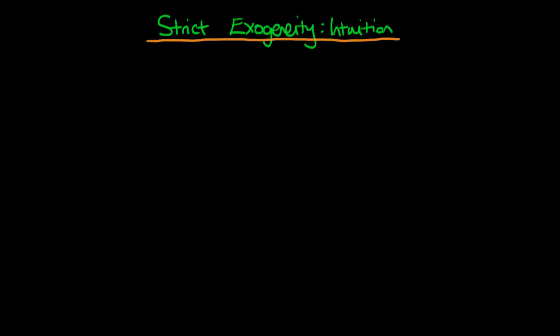In this video I want to talk about the intuition as to why strict exogeneity violations lead to bias in OLS estimates. The first example we're going to talk about is the situation where we have what we call lagged independent variables.